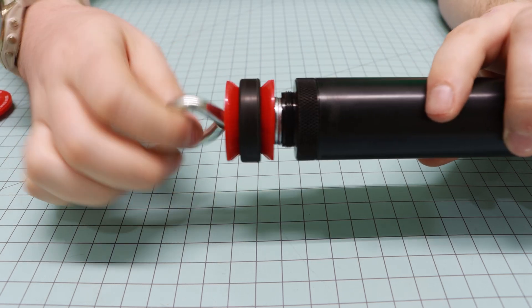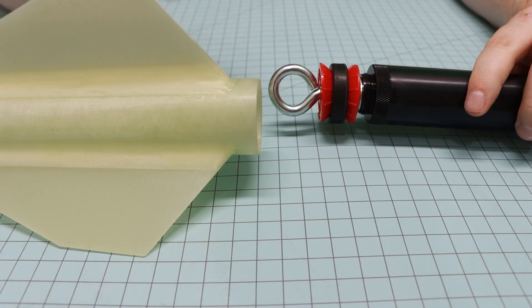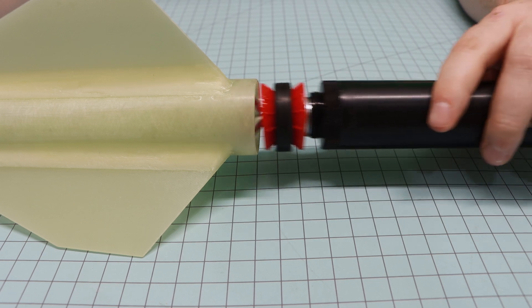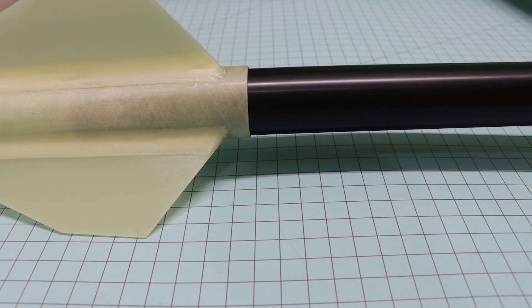So if we loosen it up all the way we've got a 38 millimeter minimum diameter rocket here. If we slide it in and we just start twisting,